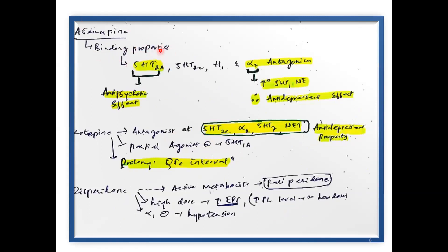Asenapine has binding properties including blockade of the 5-HT2A receptor, which accounts for its antipsychotic effects. It also inhibits 5-HT2C and alpha-2 receptors, which are responsible for increasing serotonin and norepinephrine levels centrally, giving it an antidepressant effect. It also blocks the H1 receptor. Coming to Zotepine — it has antagonistic activity at 5-HT2C, alpha-2, 5-HT7, and the norepinephrine transporter, which attributes to its antidepressant property.